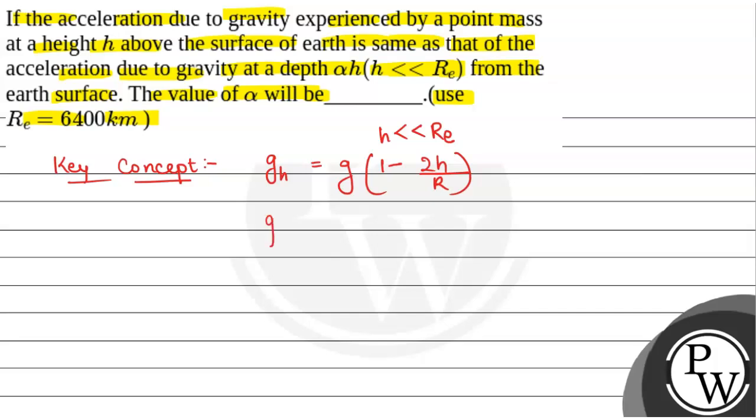Now acceleration due to gravity at a depth d is given by g times (1 minus d/R). Here we have been given d equals alpha h.